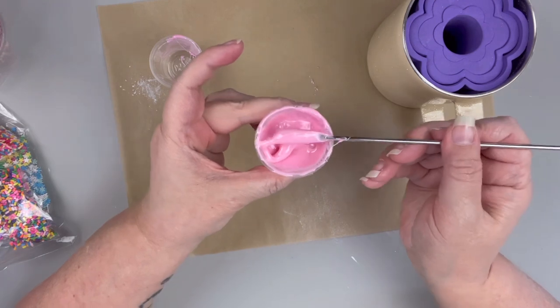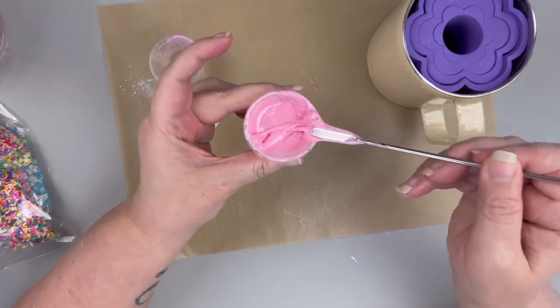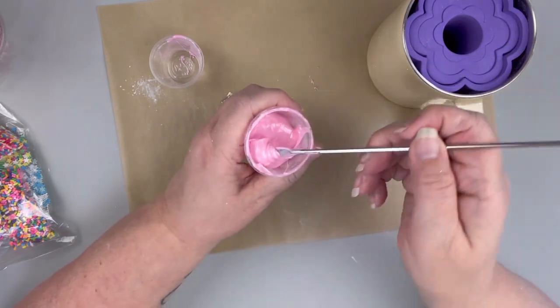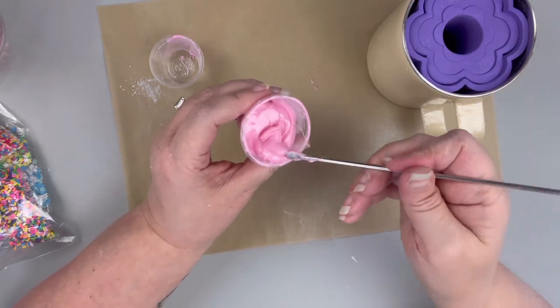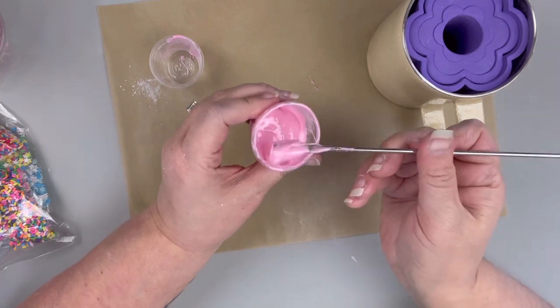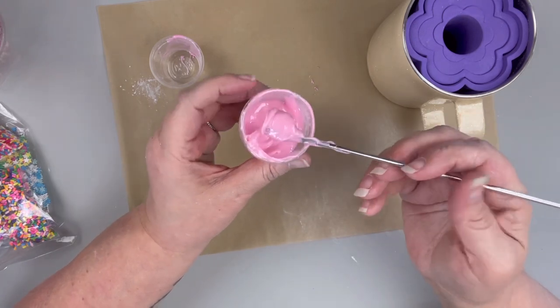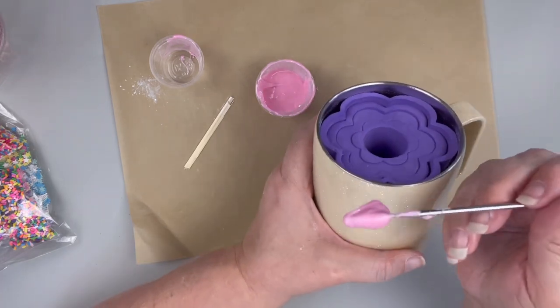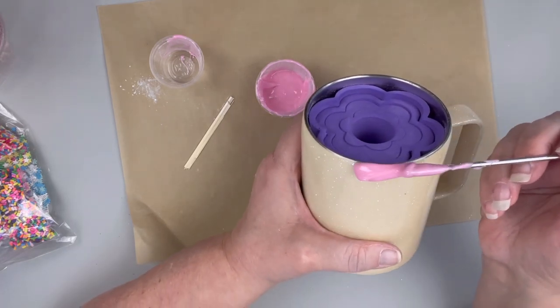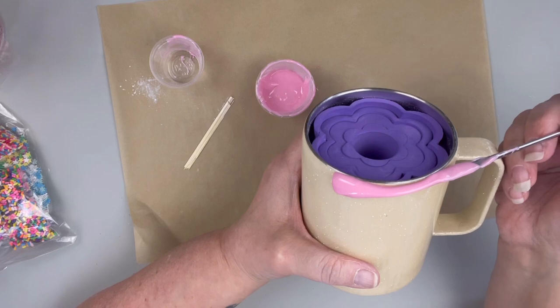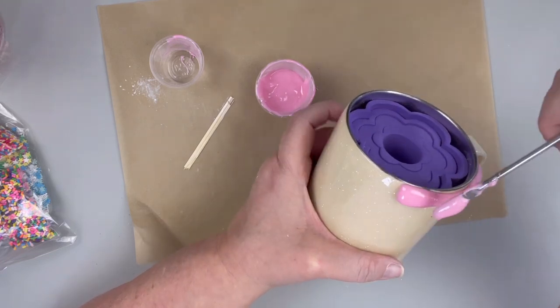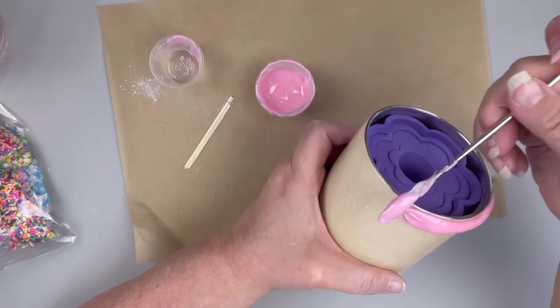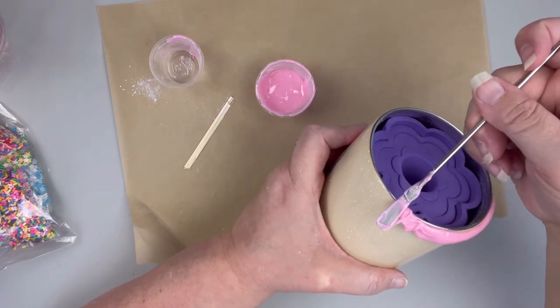With this being fast-set epoxy, it's not going to take it long to set up. So I just keep checking to see if it's the consistency that I'm looking for. And I wanted this a fairly thick because I didn't want a big long drips because I wanted it to be donut icing. So once I get it to the consistency that I want, I'm going to go ahead and place it towards the top of the rim all the way around. Now I'm doing a little bit thicker in the back than I do in the front because I do not want my logo to get covered.